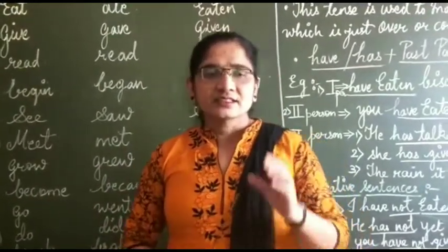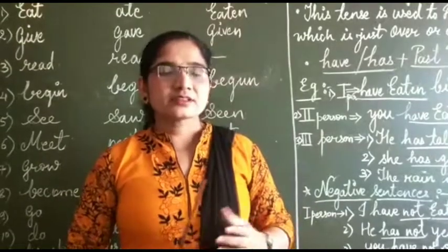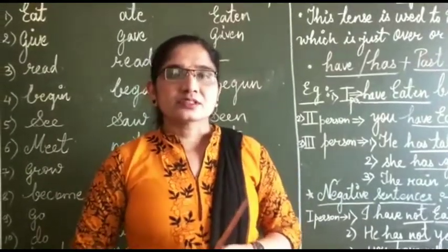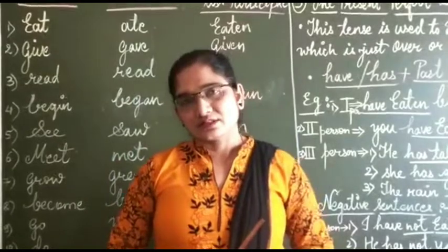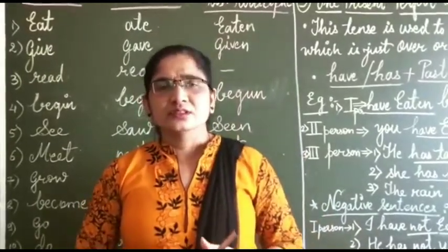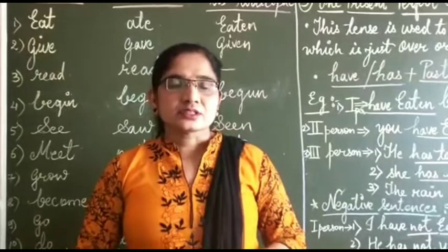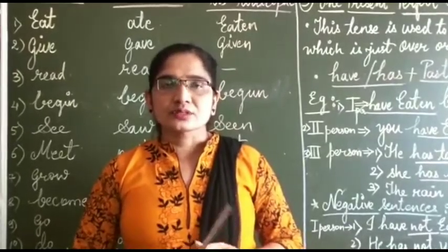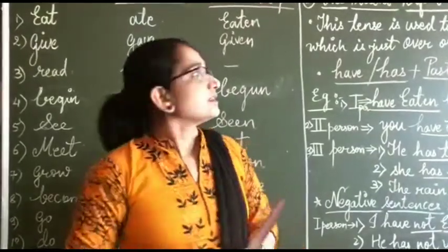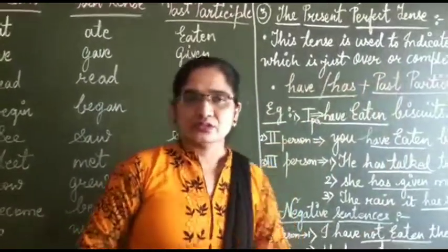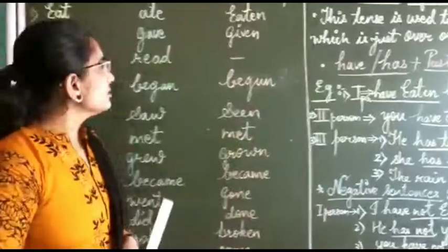Okay children, yesterday when the online classes were going on, I explained the tenses. In the tenses, we discussed about present tense, past tense, and future tense. In the present tense, there are four forms: present tense, present continuous tense, present perfect tense, and present perfect continuous tense. I have completed two formations online — simple present tense and present continuous tense. Right now I am going to explain the present perfect tense, which is the third formation. Next time, the present perfect continuous, the fourth formation, will be completed.